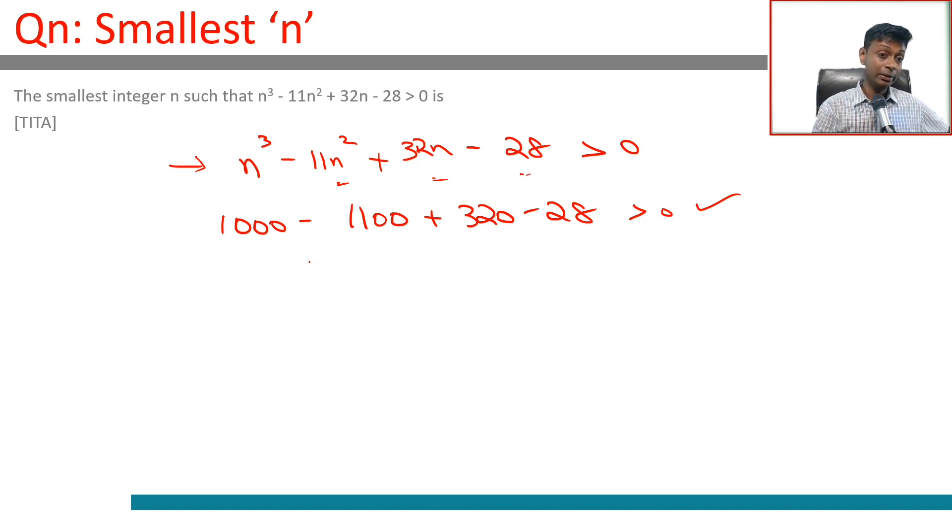If 8 works then I can go lower. So this is 512 - 11 × 64 + 32 × 8 - 28. So 512 - 704 + 32 × 8, this is 256 - 28.